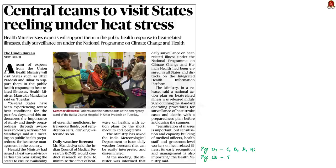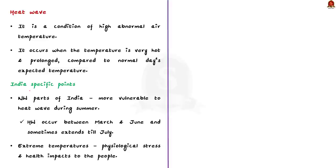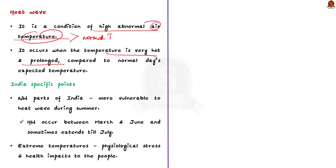A team of experts from the Union Health Ministry will visit the states of Uttar Pradesh and Bihar to support such states in public health responses to heat-related illnesses. In this discussion, we will learn about heat waves and their impacts. A heat wave is a condition of abnormally high air temperature. During a heat wave, the air temperature is more than the normal maximum temperature. The heat wave usually occurs when the temperature is very hot and prolonged compared to the normal expected temperature.